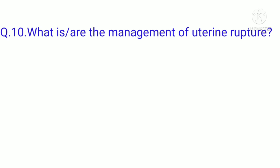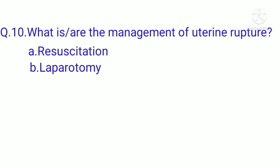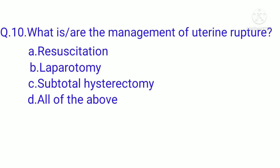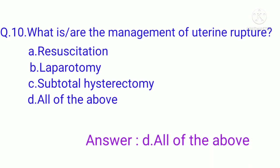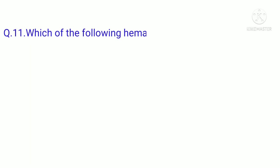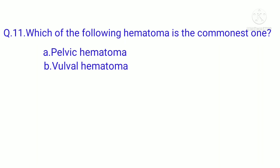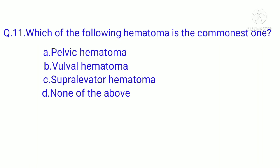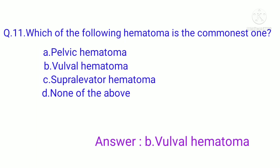Question 10: What is the management of uterine rupture? Option A: resuscitation, Option B: laparotomy, Option C: subtotal hysterectomy, Option D: all of the above. The correct option is D, all of the above. Question 11: Which of the following hematomas is the commonest? Option A: pelvic hematoma, Option B: vulval hematoma, Option C: supralevator hematoma, Option D: none of the above. The correct option is B, vulval hematoma.